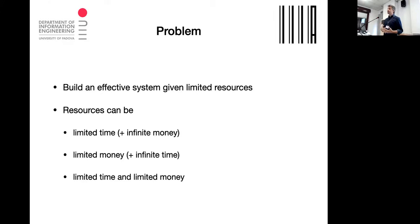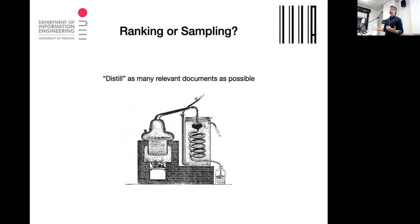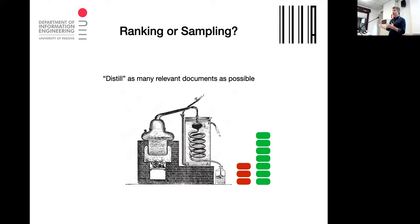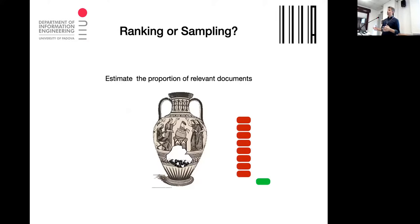How do we build an effective system given limited time or money? It's a question of balancing: we want a system that retrieves relevant documents, but remember that when you do that, you cannot directly estimate how many relevant documents remain in the collection. Alternatively, you could start sampling in a clever, non-random way so that at some point you know, for example, that 10% of the collection contains relevant documents.